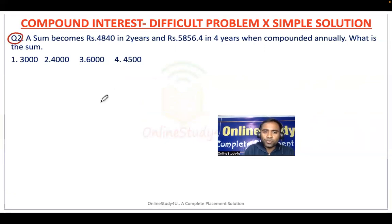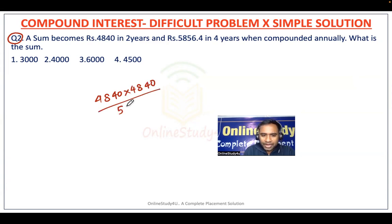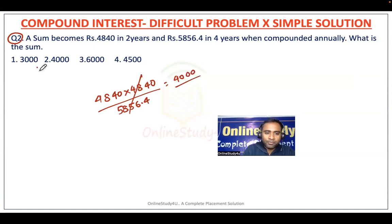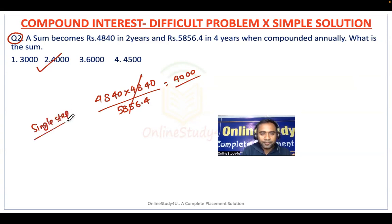So at the end of the session you will not have any doubt about compound interest problems. All types of problems I will cover, so you will feel very confident. A sum becomes 4840 in two years and 5856.4 in four years when compounded annually. What is the sum? If you simplify you will get 4000. Just one single step and you get the solution.